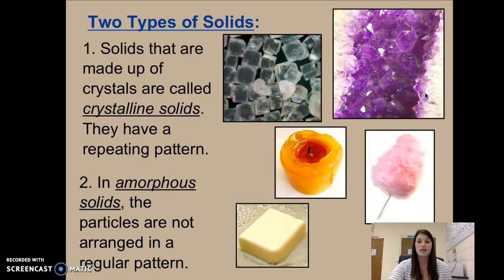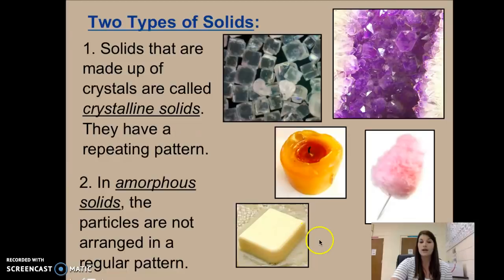The other type of solid that we have is an amorphous solid, and if we're using our stems, a means without or not and morph means shape or form. So this means without a specific shape or without a specific form. It is still a solid. The particles that make it up are still tightly close packed together and vibrating in place, but they don't have the crystalline or a repeating pattern like salt or like a gemstone might. Examples of an amorphous solid that do not have a regular pattern would be like candle wax or butter or even cotton candy.